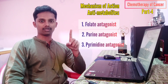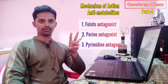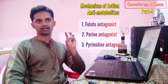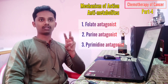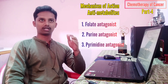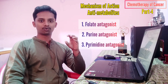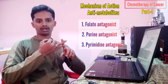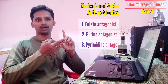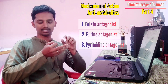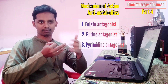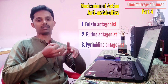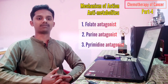In summary, we have three categories: folate antagonist, purine antagonist, and pyrimidine antagonist. The folate antagonist is methotrexate, the purine antagonist is 6MP, and the pyrimidine antagonist is 5FU. All three of these are commonly used anti-metabolite drugs. Folate, purine, and pyrimidine are all essential for DNA synthesis. If DNA synthesis is reduced, cell replication is blocked, and the cell will eventually die. This is all about the mechanism of action of anti-metabolites.